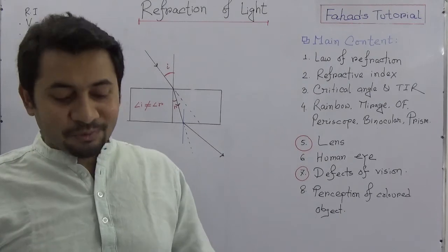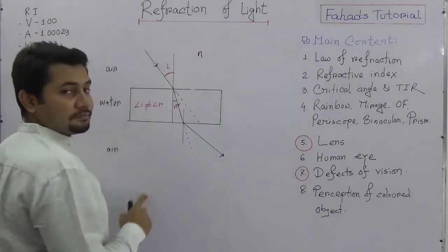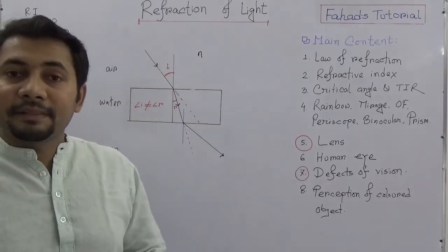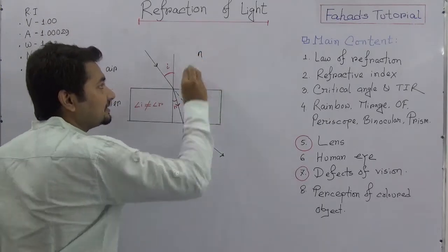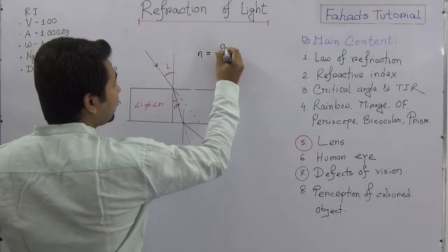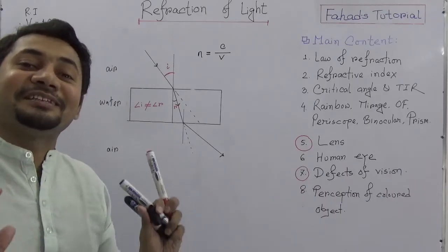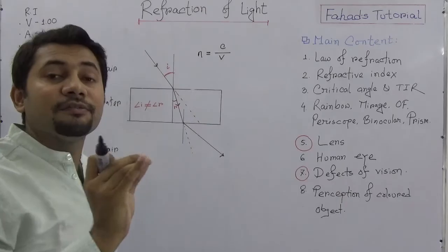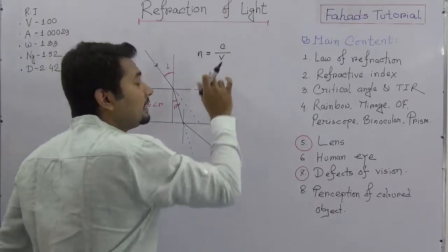This difference in velocity is why the direction changes, and that ratio is known as the refractive index — a quantity expressed by N. The refractive index is defined as C by V, which is very important and simple: C is the velocity of light in vacuum, and V is the velocity of light in any medium.